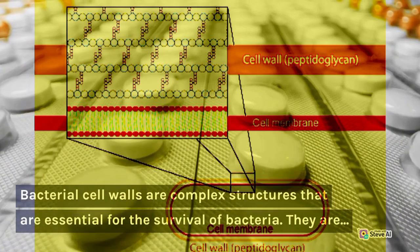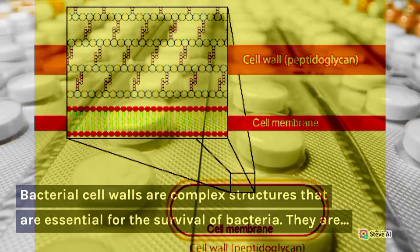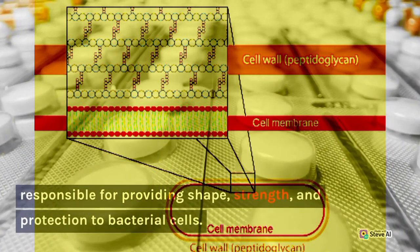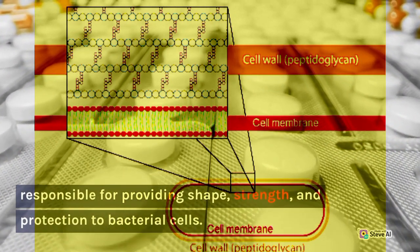Bacterial cell walls are complex structures that are essential for the survival of bacteria. They are responsible for providing shape, strength, and protection to bacterial cells.